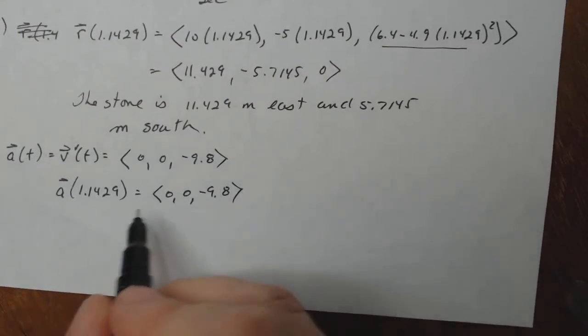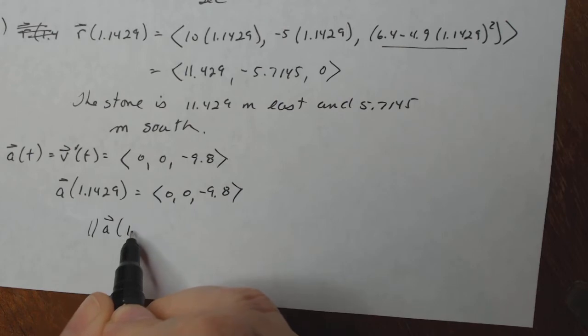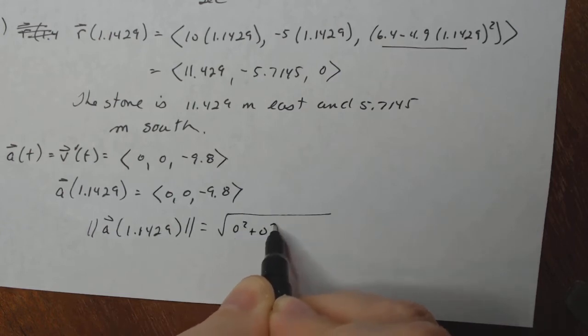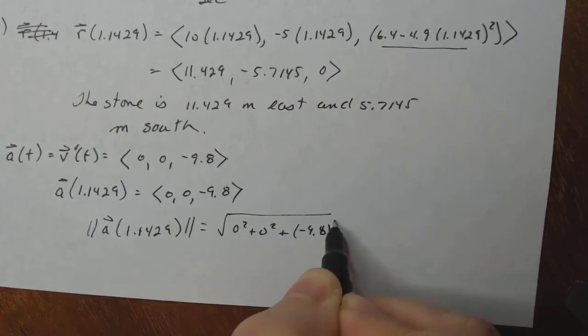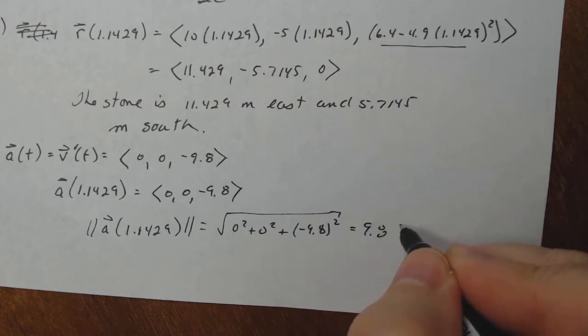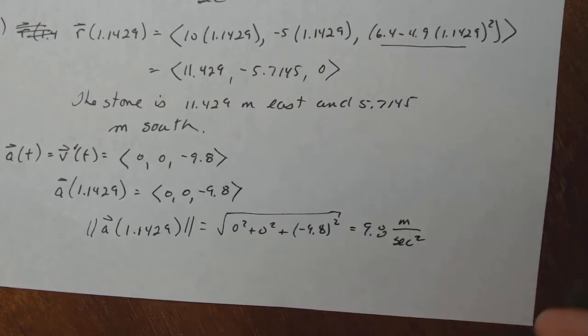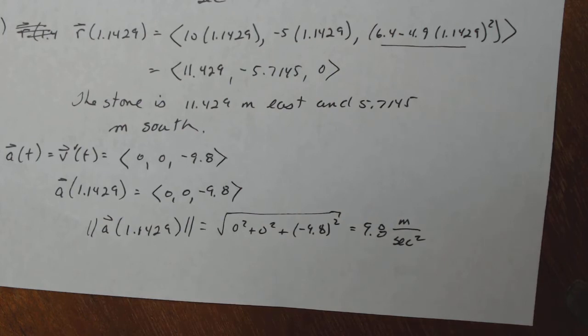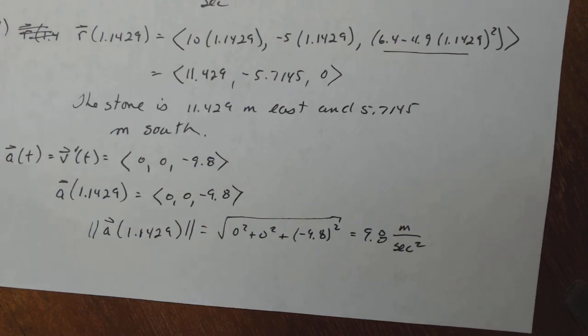So if I took the magnitude of this thing, which is really what I want, what is the acceleration, not the vector of the acceleration? That's going to be the square root of 0 squared plus 0 squared plus negative 9.8 squared, which will just give me 9.8. Now what's the unit of measure on that? Well, that's going to be meters per second squared. If velocity is meters per second, then acceleration is meters per second squared. And that's actually the acceleration due to gravity. So since this rock, the only thing that's affecting its movement is gravity, it makes sense that acceleration should be 9.8 meters per second squared. All right. I hope you found this helpful.